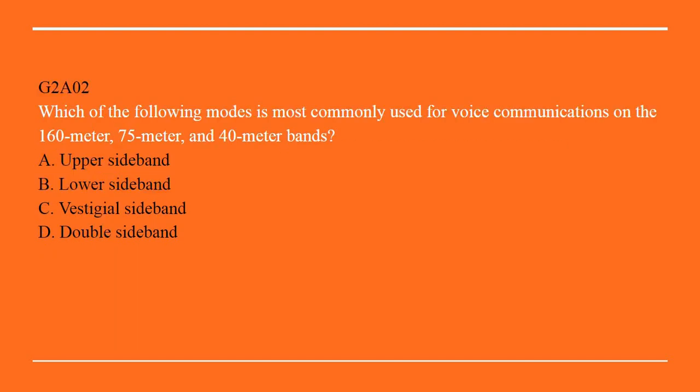G2A02: Which of the following modes is most commonly used for voice communications on the 160 meter, 75 meter, and 40 meter bands? A. Upper sideband. B. Lower sideband. C. Vestigial sideband. Or D. Double sideband. Answer here is B: Lower sideband.